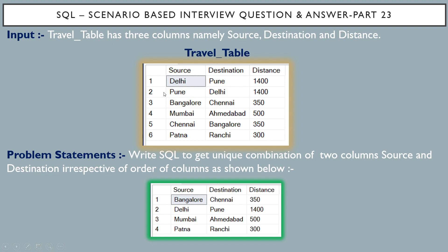In row number two, source is Pune and destination is Delhi — source and destination got interchanged. Row number three has source as Bangalore and destination as Chennai with distance 350 kilometers. Row number five has source as Chennai and destination as Bangalore, also 350 kilometers. In the output table we have only one entry for each of these pairs.